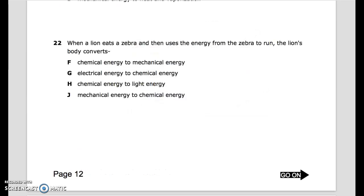Number 22: When a lion eats a zebra and then uses the energy from the zebra to run, the lion's body converts: F. chemical energy to mechanical energy. G. electrical energy to chemical energy. H. chemical energy to light energy. J. mechanical energy to chemical energy.